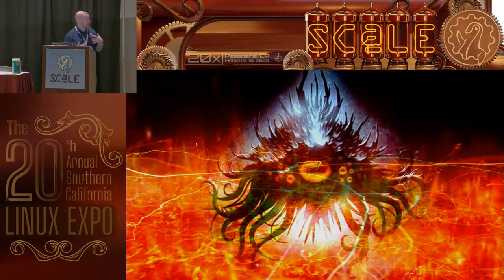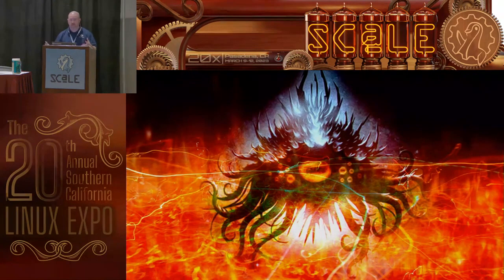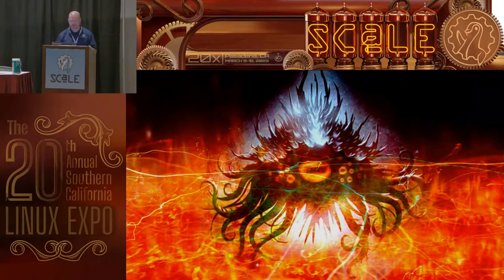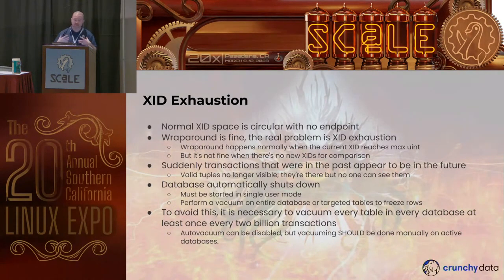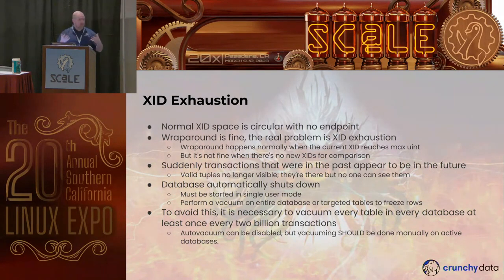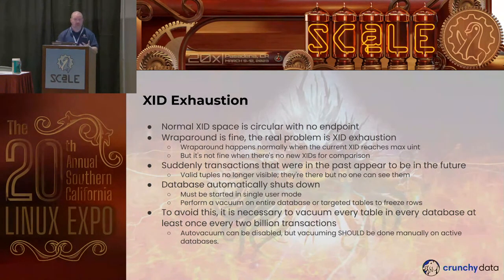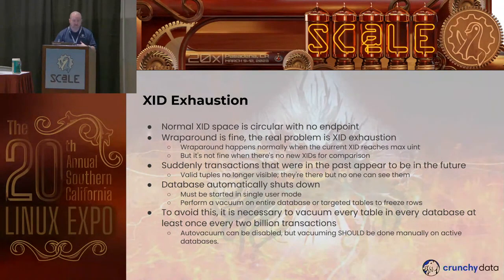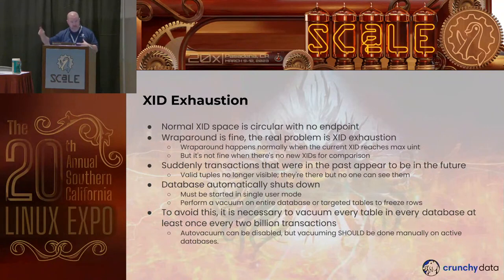After billions and billions of transactions with no freezing, we run into transaction ID exhaustion. The normal XID space is circular with no endpoint — otherwise how would a database run for years with that integer limit? People often talk about wraparound being the problem, but wraparound itself isn't the actual problem. PostgreSQL can wrap around fine as long as there are unused transaction IDs somewhere in that space. The problem is when it runs out of future IDs — when wraparound happens with no numbers left to go to, that's the bad part. Suddenly everything that was in the past is in the future, meaning your entire database becomes invisible.